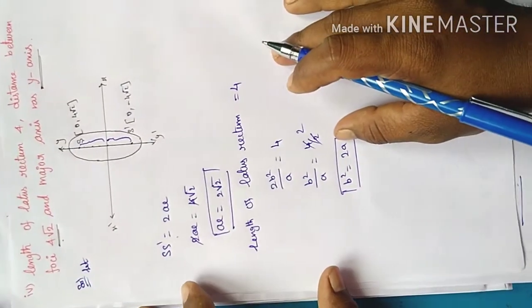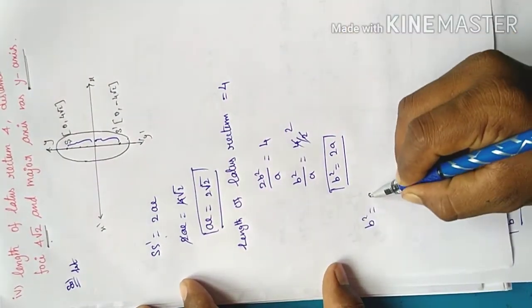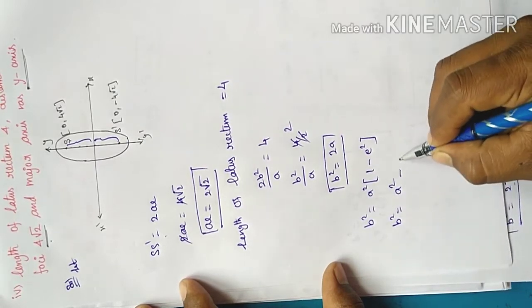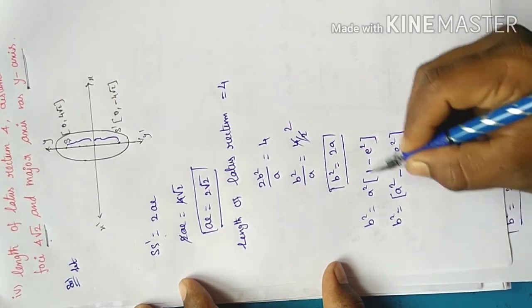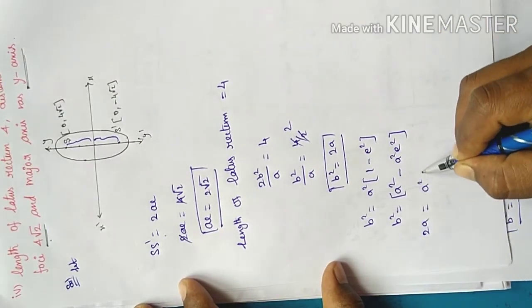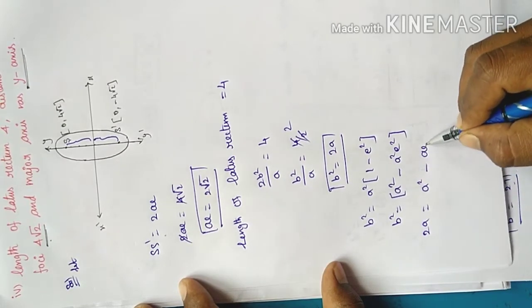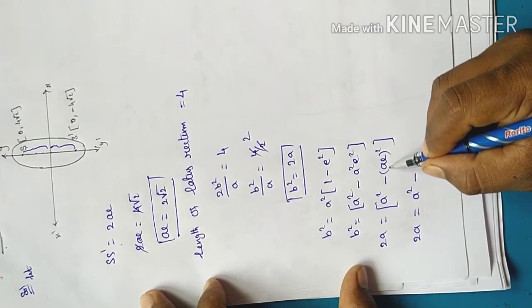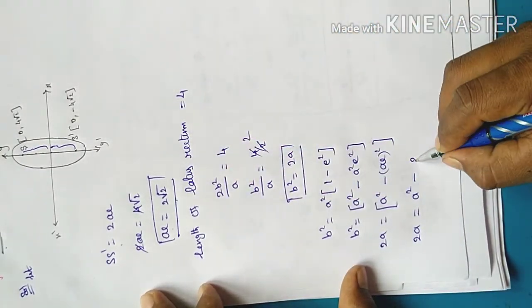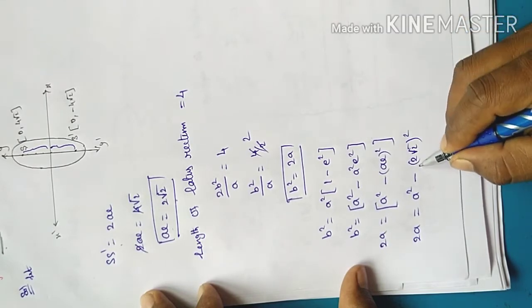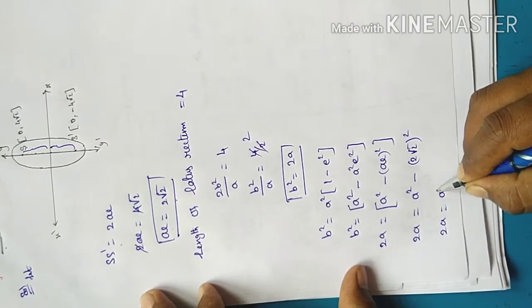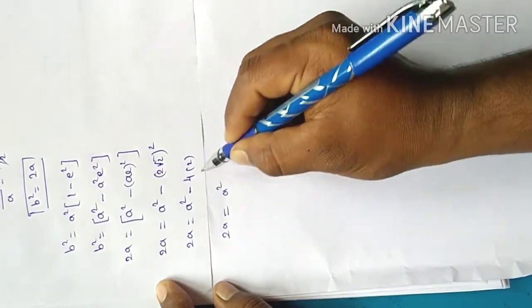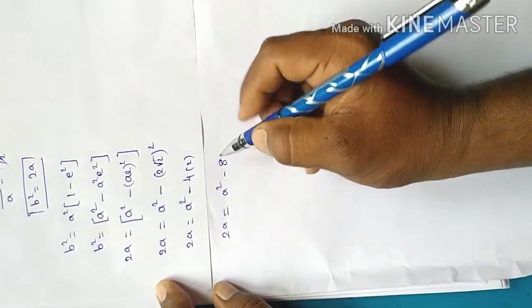Formula: b square equal to a square into 1 minus e square, which gives b square equal to a square minus e square a square. Substituting: 2a equal to a square minus 8, where a value is 2 root 2 squared equals 8.